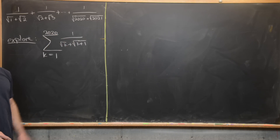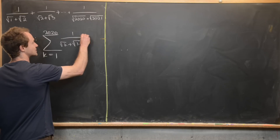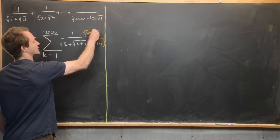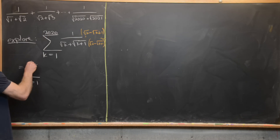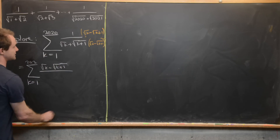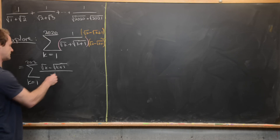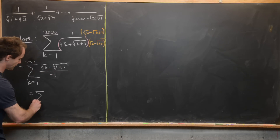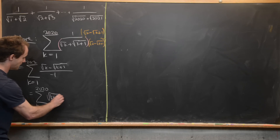Generally when we have radicals in the denominator, it's typical to rationalize. Multiplying each term by (√k - √(k+1)) in the numerator and denominator, the denominator becomes a difference of squares: (√k)² - (√(k+1))² = -1. The numerator is √k - √(k+1), and dividing by -1 flips the subtraction to give √(k+1) - √k.